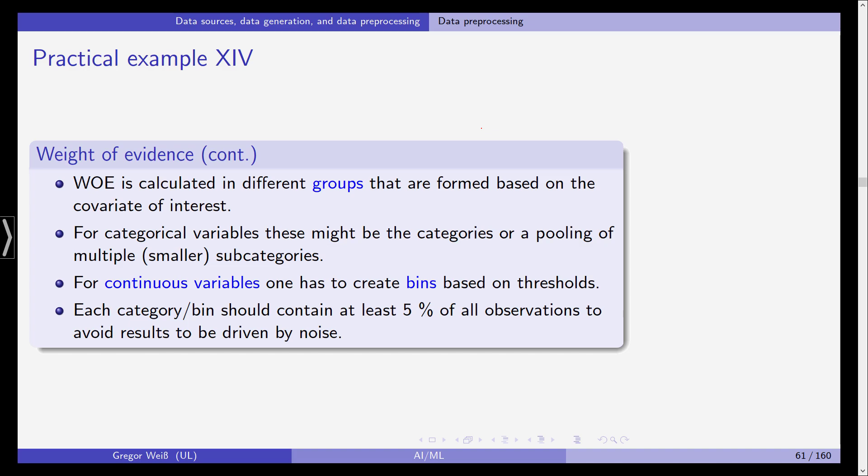So for the categorical variables, these might be the categories or a pooling of multiple smaller subcategories. For example if we think of our data we had the checking account status, we might for example have income. Because income will most likely be a float number variable or an integer one, everyone has a slightly different income. For example, you might have an income of €40,000 per year, the next person might have €40,005 per year. So all these income observations would be slightly different. So you need to pool them to arrive at larger categories in larger pools so that there are enough observations in all of these pools.